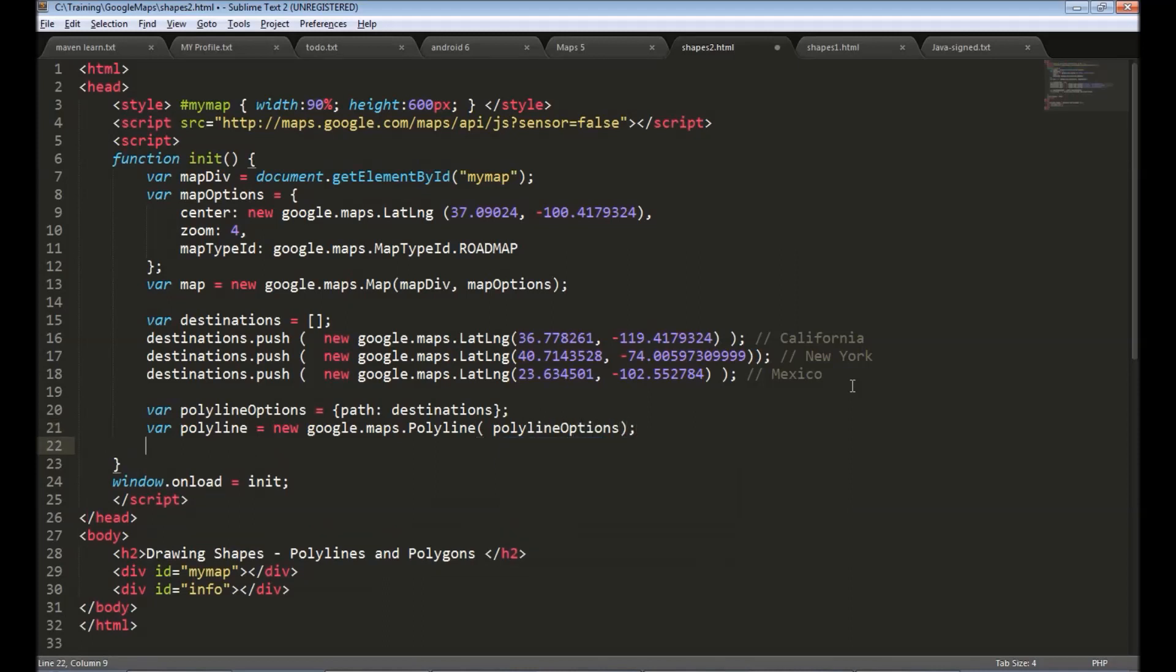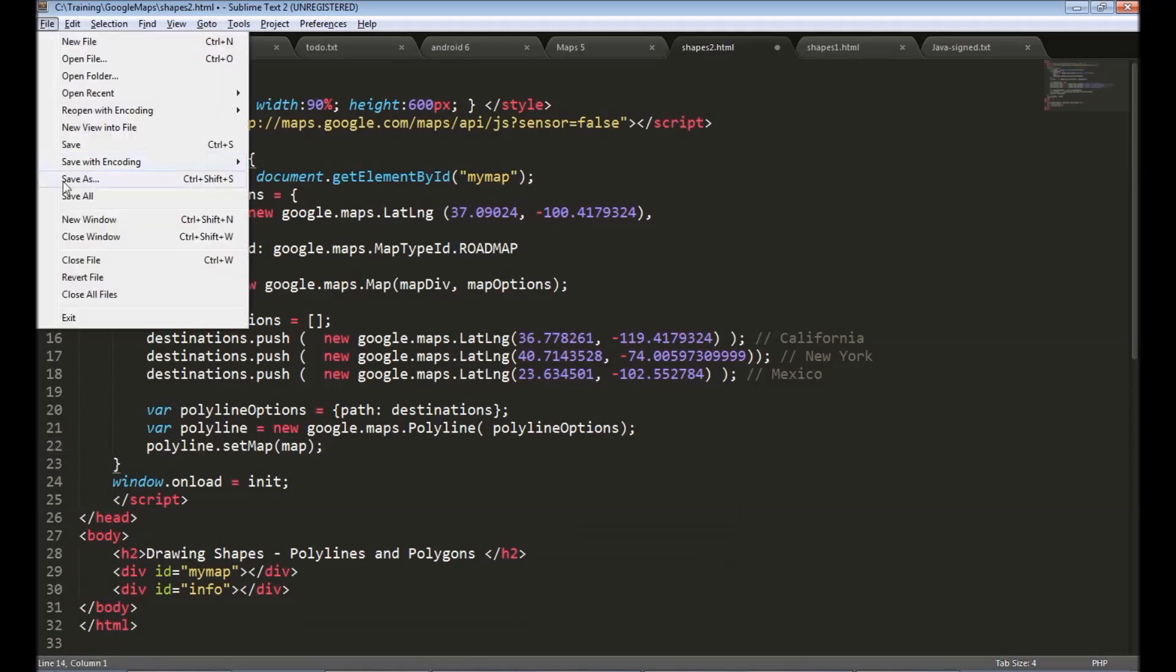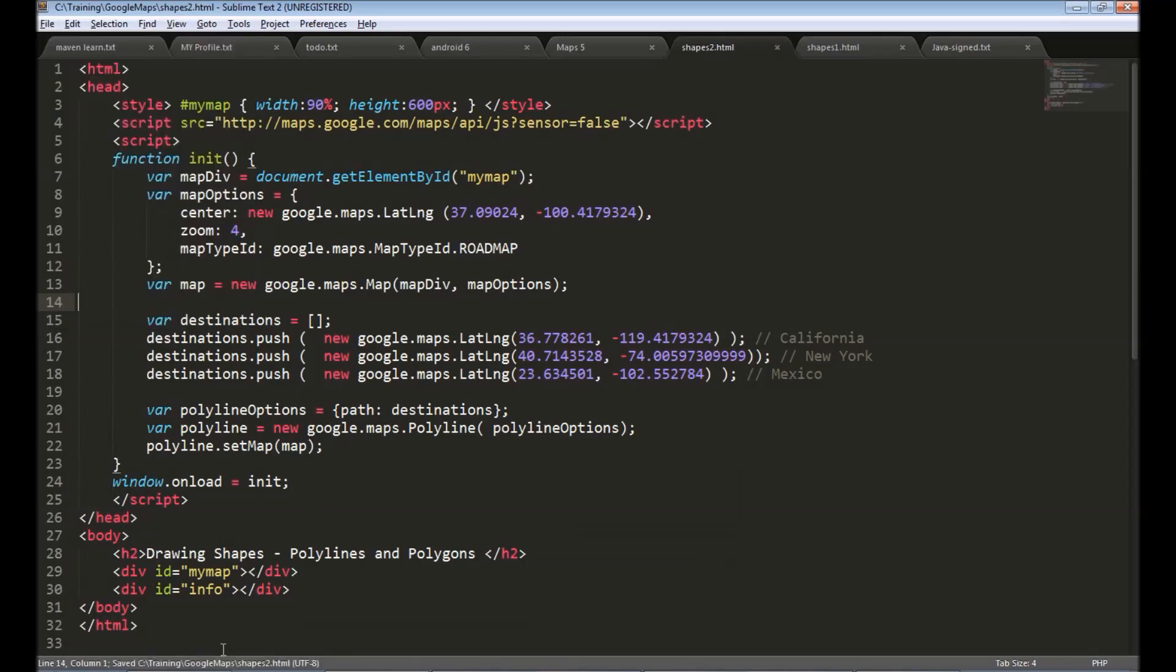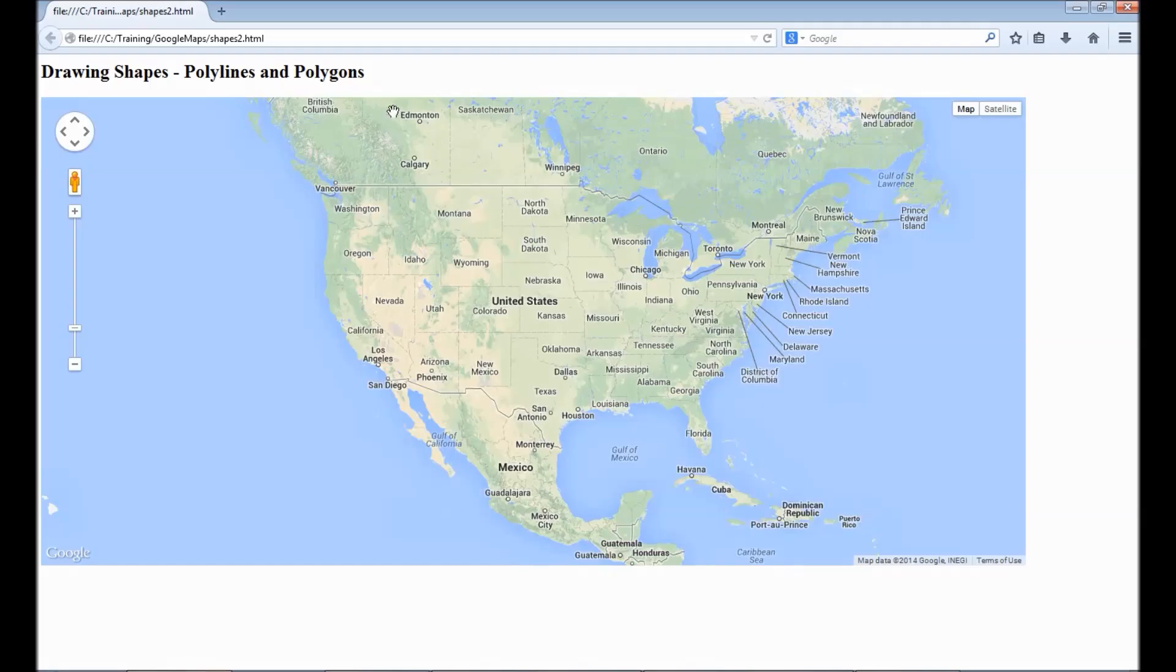The last step is to set map to this polyline object. Set map the map object that we earlier created. Save this file and let's reload our map. As we see there is a line drawn from California to New York and to Mexico.